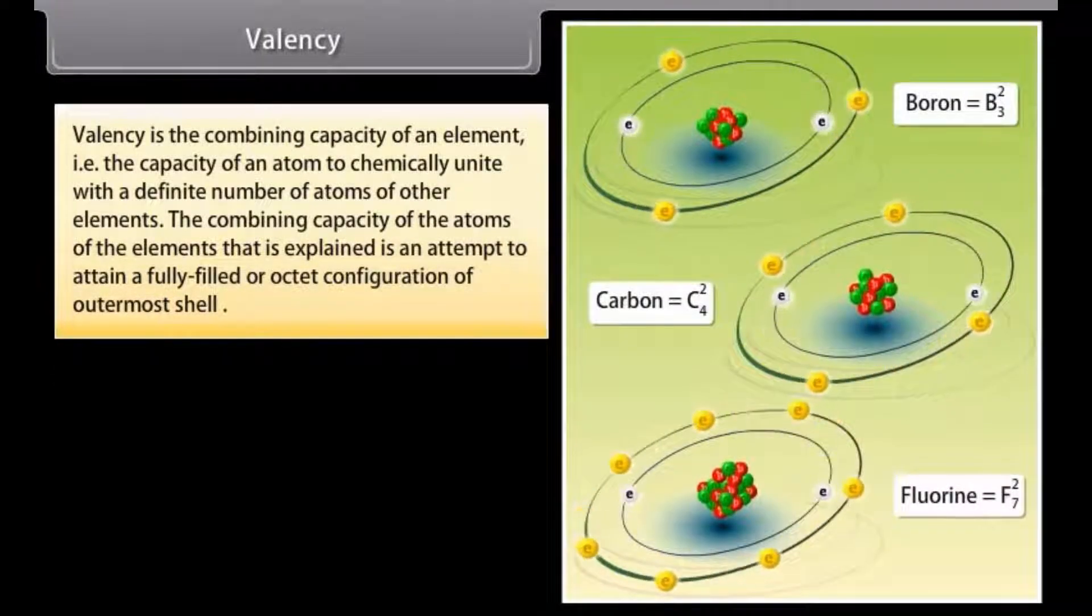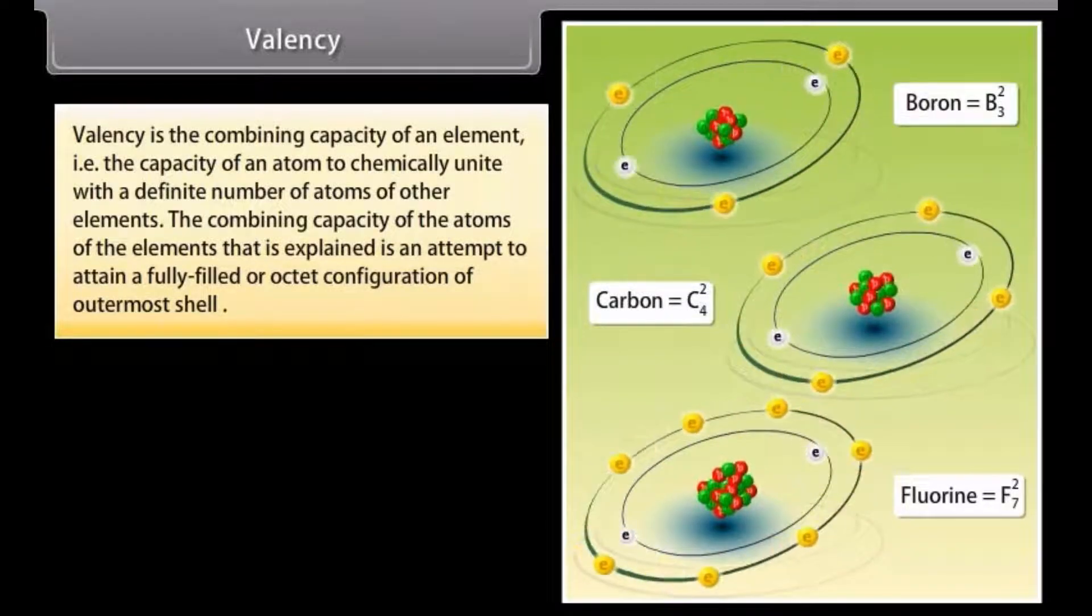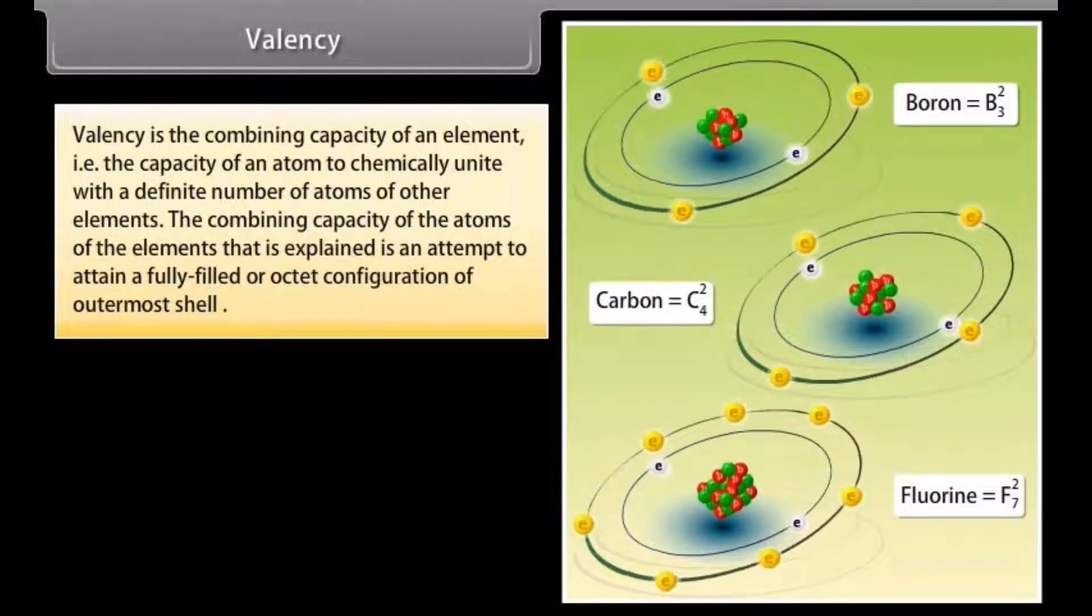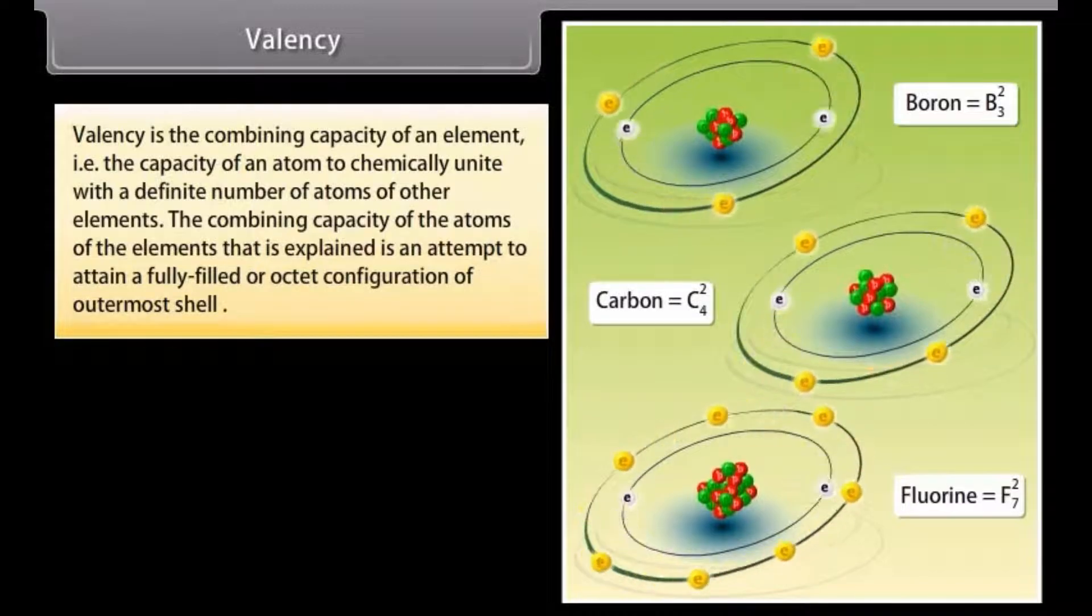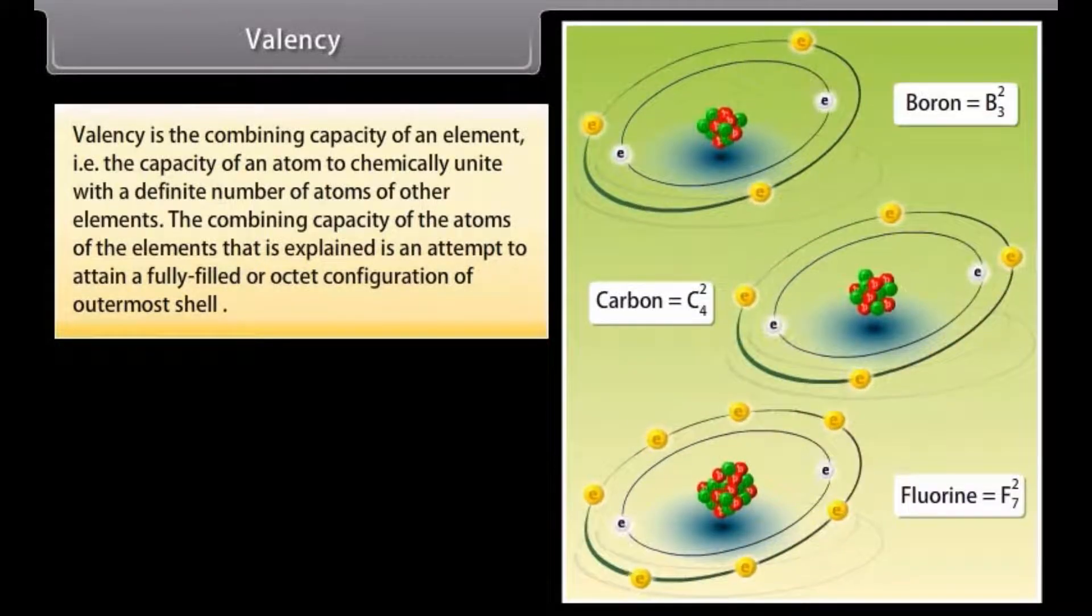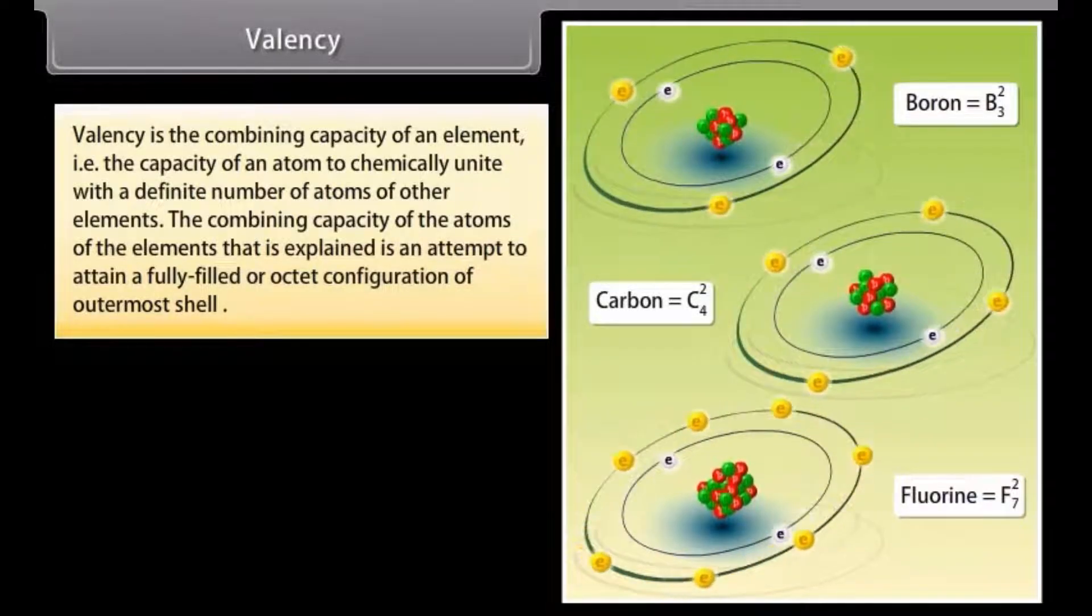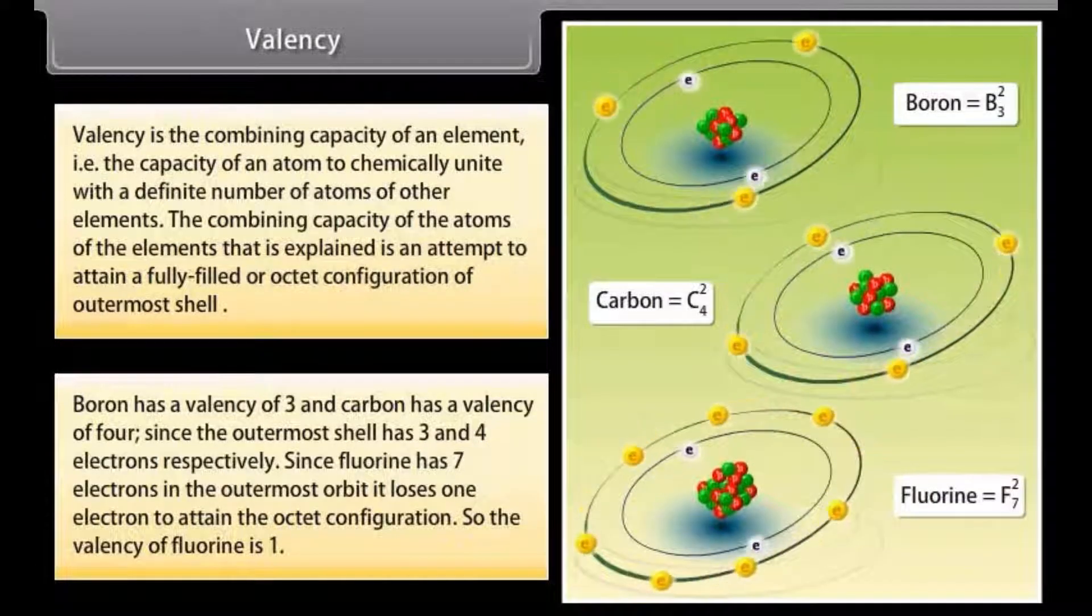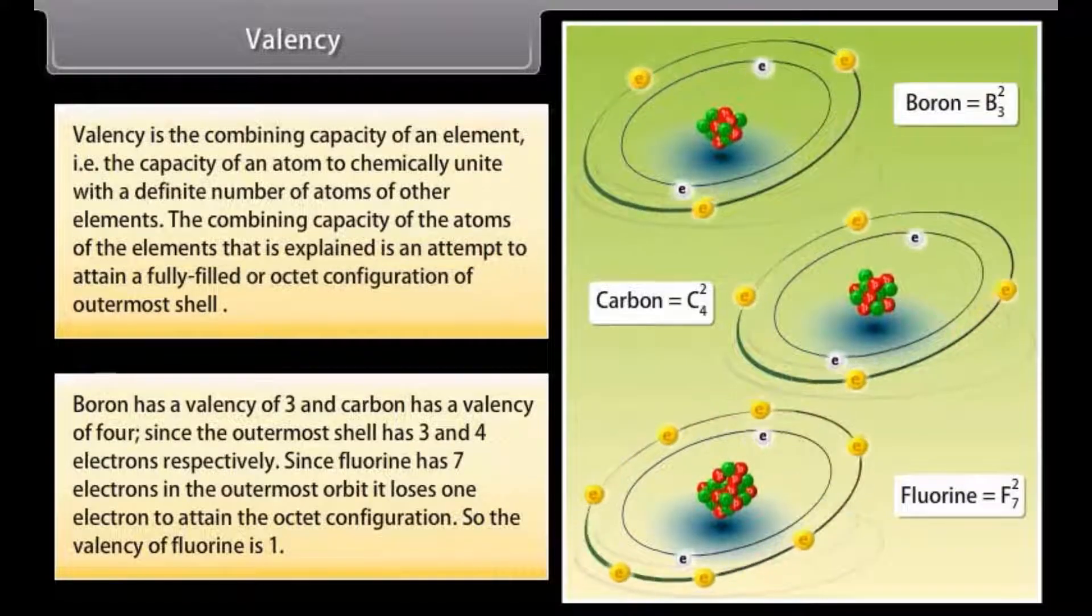Valency. Valency is the combining capacity of an element, that is, the capacity of an atom to chemically unite with the definite number of atoms of other elements. The combining capacity of the atoms of the elements is explained in an attempt to attain a fully filled or octet configuration of outermost shell. Boron has a valency of 3, and carbon has a valency of 4, since the outermost shell has 3 and 4 electrons, respectively.